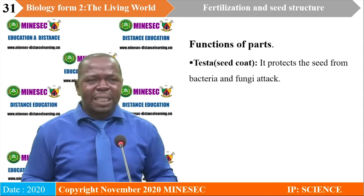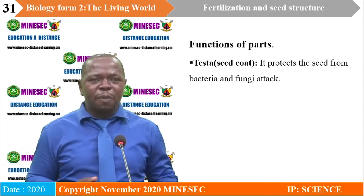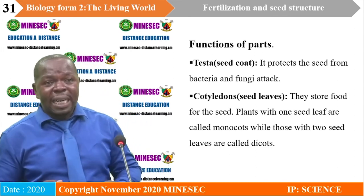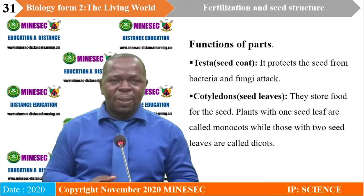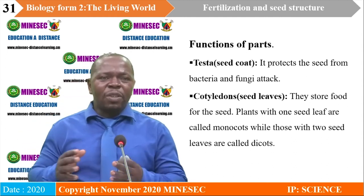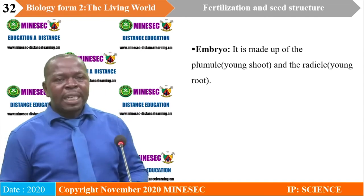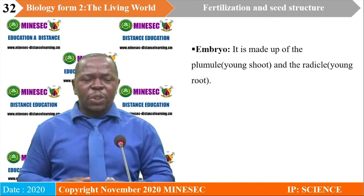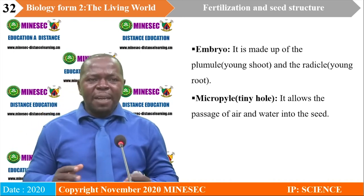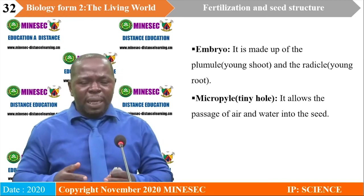Copy these notes on the functions of seed parts. The testa or seed coat functions to protect the seed from bacteria and fungi attack. The cotyledon, also called seed leaves, stores food for the seed. Plants with one cotyledon are called monocots, while those with two cotyledons are called dicots. The embryo is made up of the plumule (young shoot) and the radical (young root). The micropyle is a tiny hole which allows air and water to enter the seed.